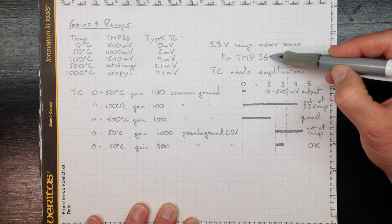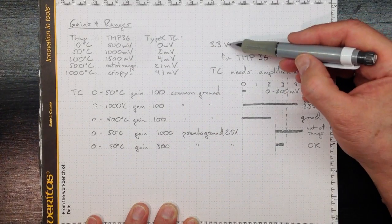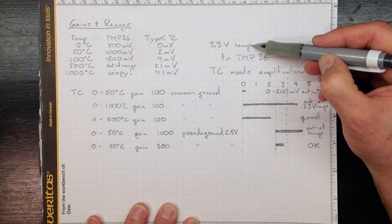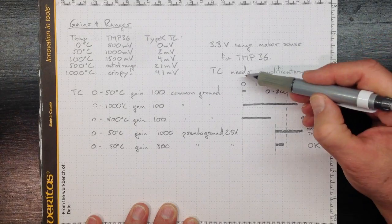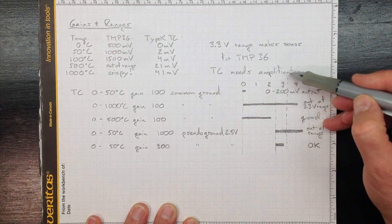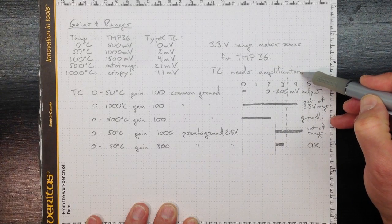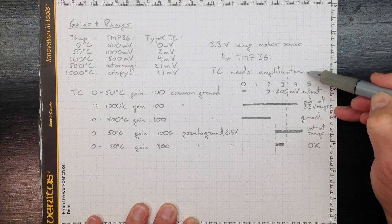Looking at the TMP-36, if we're covering a reasonable range, then the 3.3 volt input range on the Arduino directly from the TMP-36 makes sense. There's no way we're ever going to get a good reading from the thermocouple without using some amplification. So now we need to figure out what sort of amplification we'd like to get.